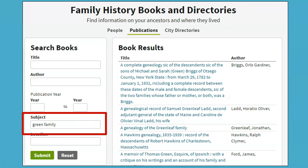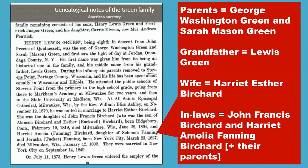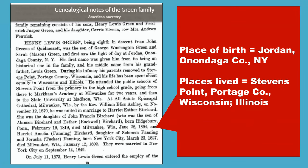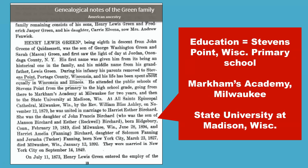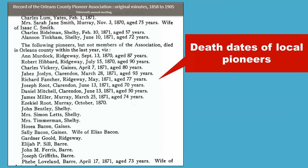There are also many local and family histories in Heritage Quest. To search for a family's surname, input the surname in the subject field with the word 'family' — so here we see 'Green family.' This entry for Henry Louis Green includes important family details such as his parents' names, his grandfather's name, his wife's name, and even his in-laws' names. Also included are his place of birth in Jordan, Onondaga County, New York, other places lived such as Stevens Point, Portage County, Wisconsin, and Illinois, and his education details. Oftentimes local history books in Heritage Quest transcribe vital data, such as death dates of local pioneers.